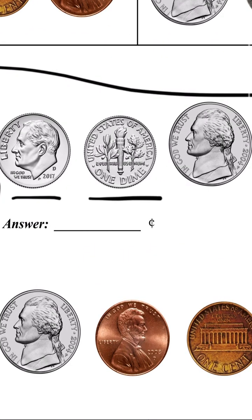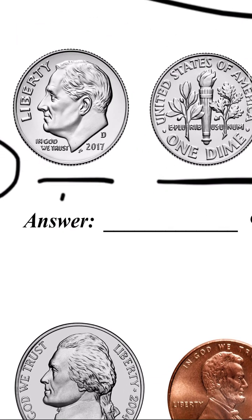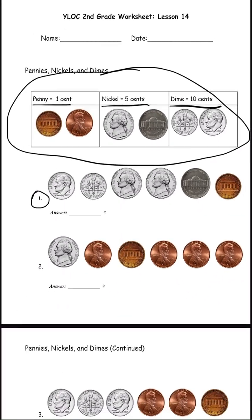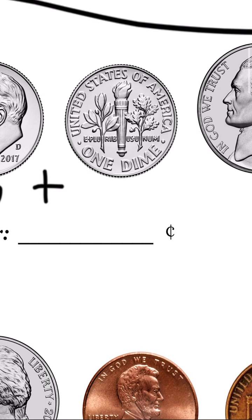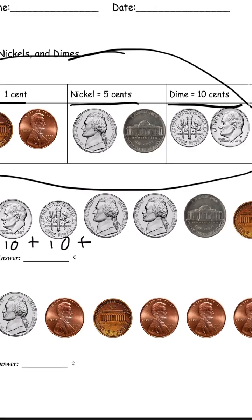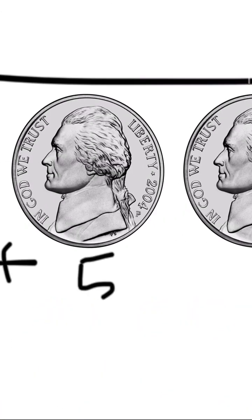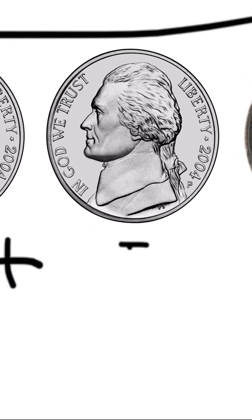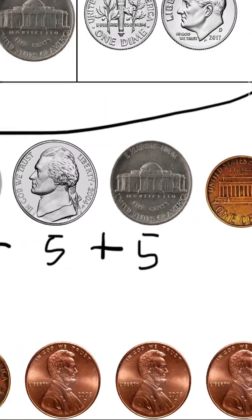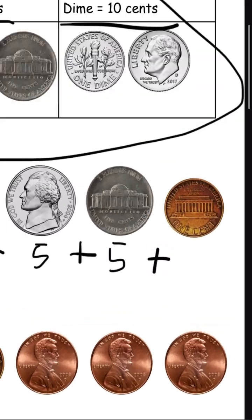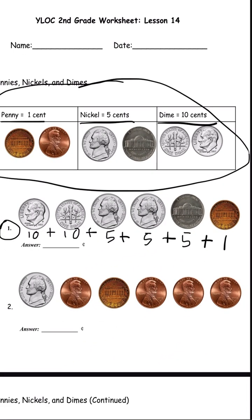This is also a dime, so that's ten plus ten. This is a nickel, which is five, so plus five. And this is also a nickel, so plus five. Then if you look at the chart, this is a penny, so plus one. Now we have to add them all up: ten plus ten is twenty, twenty plus five is twenty-five.